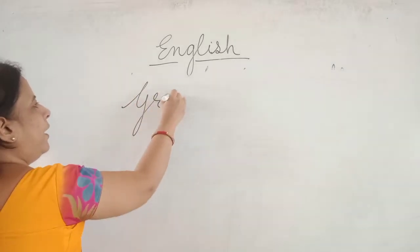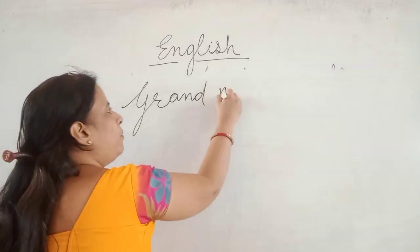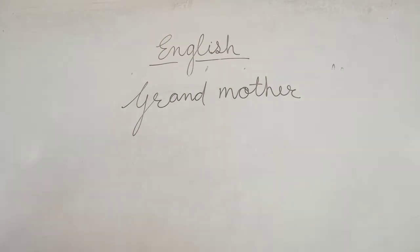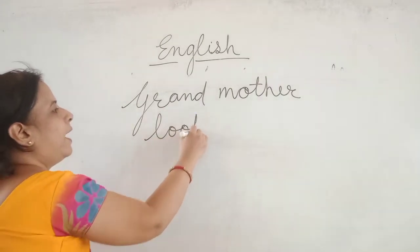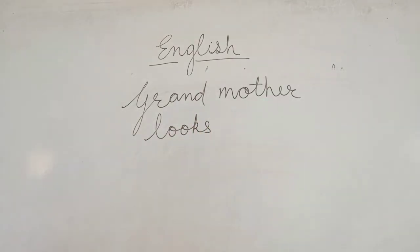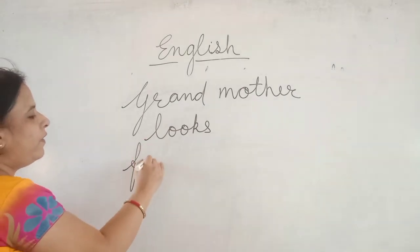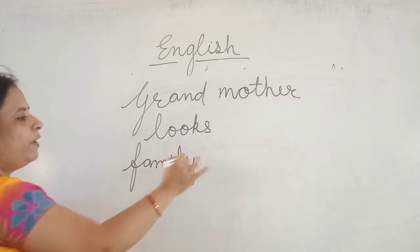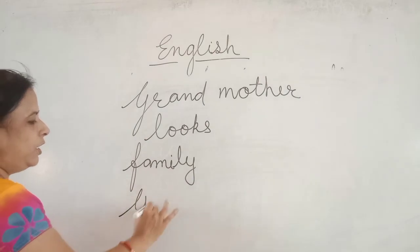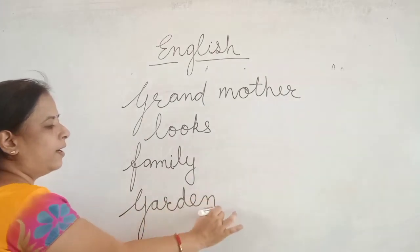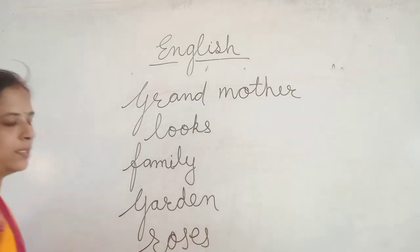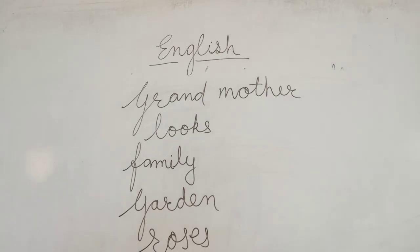Grand: G-R-A-N-D, grandmother. M-O-T-H-E-R, mother. Grandmother. Looks: L-O-O-K-S, looks. Again, family: F-A-M-I-L-Y, family. Garden: G-A-R-D-E-N, garden. Roses: R-O-S-E-S, roses.